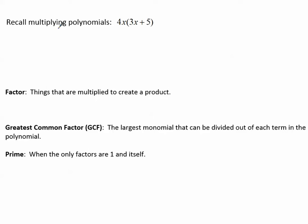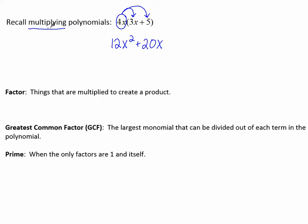Recall multiplying polynomials. When we multiply polynomials that look like this, we distribute. So we take 4x and multiply it to 3x. 4 times 3 makes 12, x times x makes x squared. 4x times positive 5 makes positive 20x. Today we're going to go backwards — instead of multiplying, we're going to divide or factor.